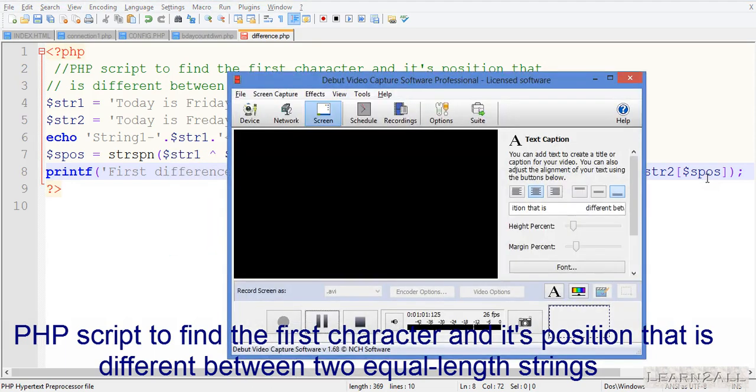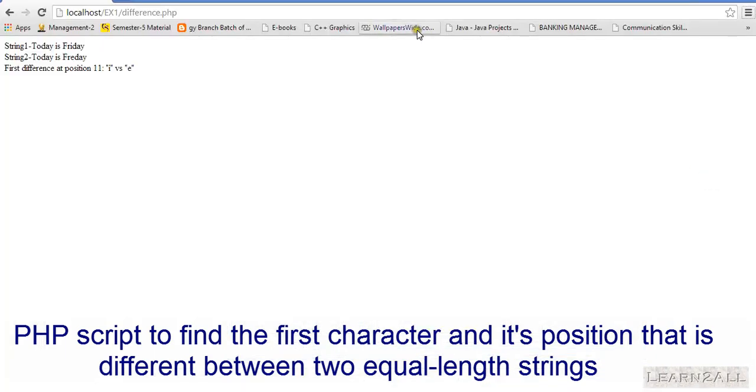Now I will show you its output. You can see here output today is Friday, today is Friday, and the difference character at position 11. 'i' is at position of 11, 'i' versus 'e'. In the place of 'i', 'e' is used. Thank you for watching my video.